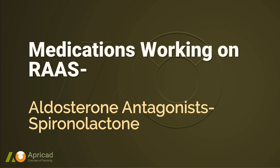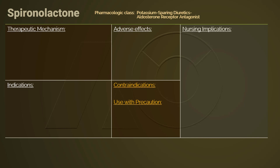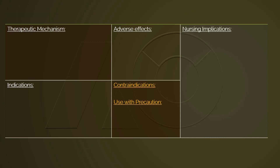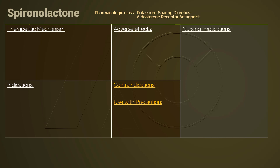The prototype drug of aldosterone antagonists is spironolactone. First introduced in the 1950s, spironolactone was and has been recognized as a potassium-sparing diuretic. As our understanding of its therapeutic mechanism advances, it is also now categorized as an aldosterone receptor antagonist. Therapeutically, spironolactone belongs to the category of diuretics.